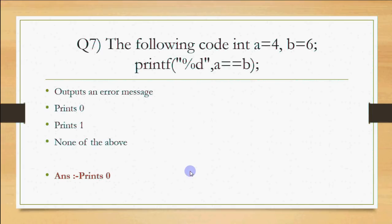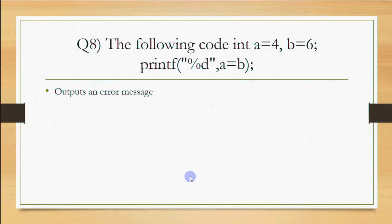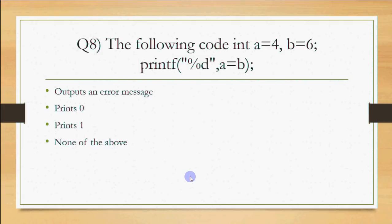A variation: now using a single equals sign — a=b (assignment). This assigns the value of b (which is 6) to a, so the expression evaluates to 6. Since 6 is non-zero, it is true, but the value printed is 6. So error message and 0 are both wrong — the answer is none of the above, because it prints 6.